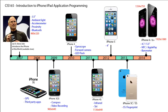A year later, they introduced the iPhone 3GS, where the resolution went up to 960 by 640. It included a compass and the ability to record video with the camera. About a year later in 2010, the iPhone 4 came out, introducing a gyroscope, a forward-facing camera great for FaceTime, and an LED flash for taking photos. A little more than a year later, the iPhone 4S introduced infrared and a really cool app called Siri, which uses voice recognition to find information for you.